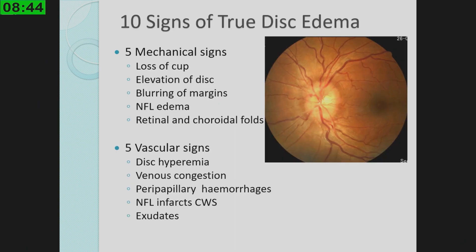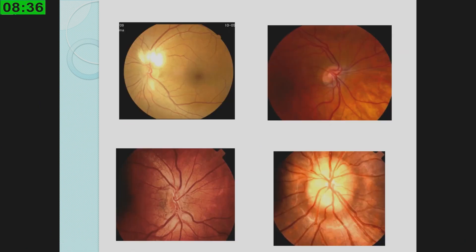Right from our PG days we are well versed with the 10 signs of true disc edema — the 5 mechanical signs and the 5 vascular signs. But in actual clinical practice all these discs can confuse us. It is not enough that the disc has a mechanical sign of disc margin blurring, as in myelinated nerve fibers, or peripapillary changes as you see in a tilted disc.